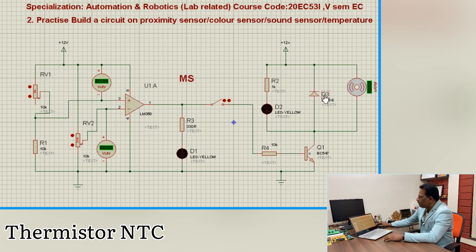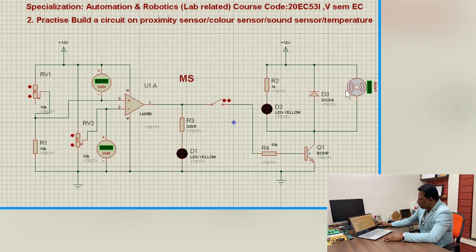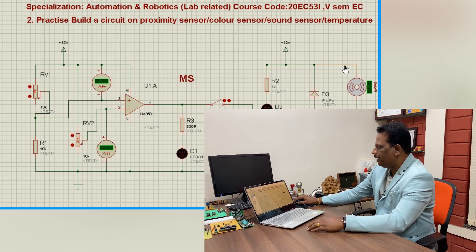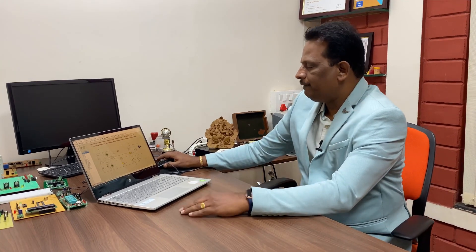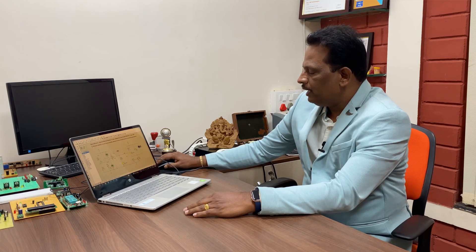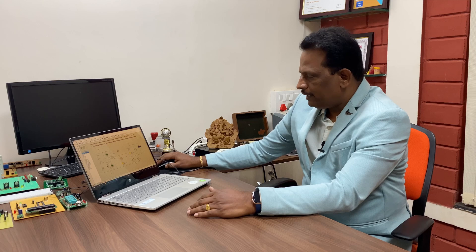The D3 diode is called a freewheeling diode. Since this is an inductive load, when the fan is on, charge is stored in the coil. When the fan stops, the polarity of the stored energy reverses. The freewheeling diode discharges this energy safely. I hope this circuit will be helpful for fifth semester students conducting experiment number 2. If you like this, please share and subscribe — thank you.